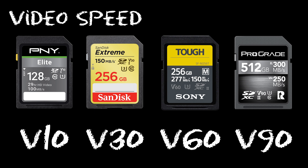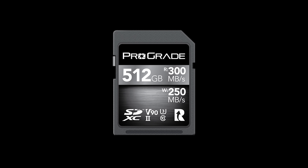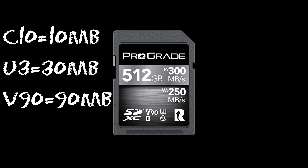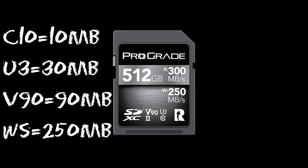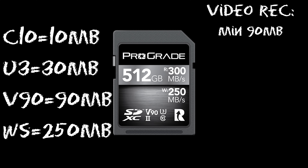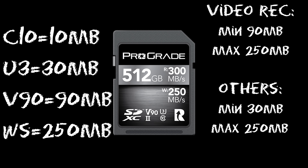Lately, companies developed a new standard for video speed due to the higher quality of video recording, and they went with V as the symbol. So we have V10, 30, 60, and 90 — the number represents the megabyte writing speed, but for video recording only. So if you have C10, U3, V90 with 250 megabytes writing speed, it's going to go as low as 90 megabytes and a max of 250 for videos.